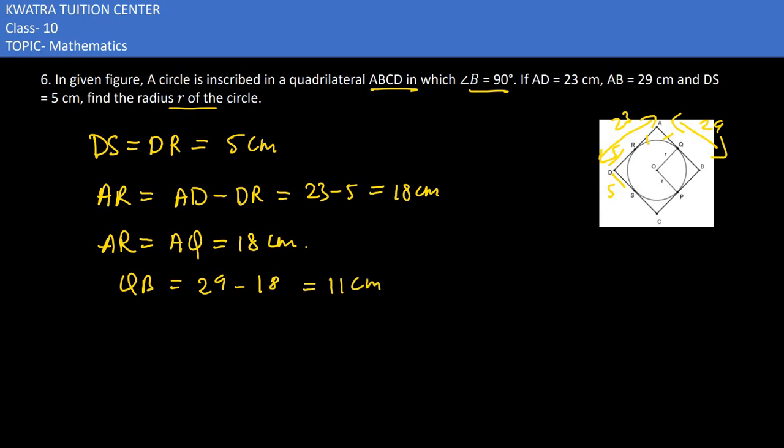Now here, as I can see, QB is 11 cm, so the opposite side OP would be 11 cm as well. So this is your answer. The radius of the circle is 11 cm. That's how we find the radius of the circle here. Thank you.